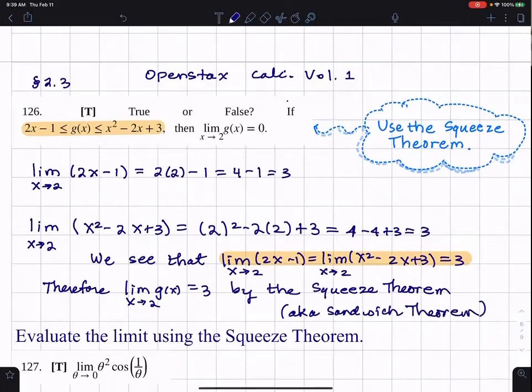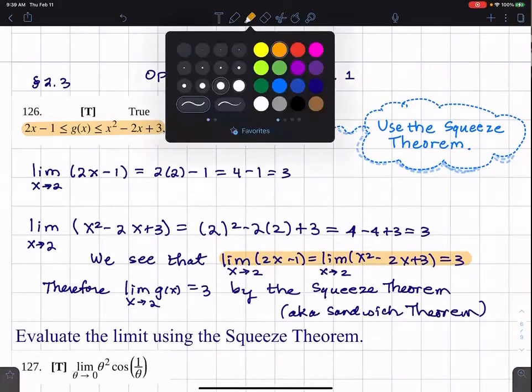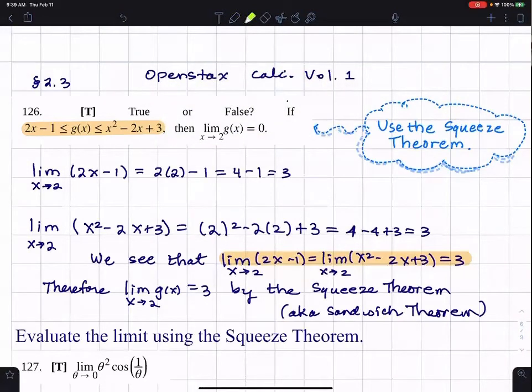I'm confused because didn't we conclude that the limit for G of X was 0? Oh, okay. Well, I'm not done yet, then. Sorry. They didn't say that. They said true or false.